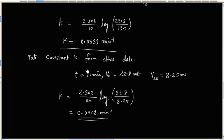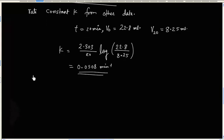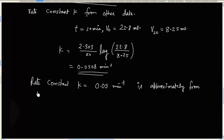And rate constant is approximately same. We cannot have exact rate constant value because of the error in experiment. So, approximately 0.05 is approximately same from two experimental data. So, order of reaction is 1. That is first order. So, H2O2 decomposition is first order.